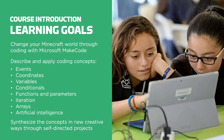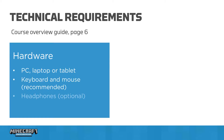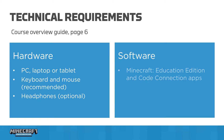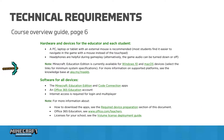You'll find the unit-specific learning goals in each educator guide. The technical requirements are found on page 6 of the course overview guide. Most students find an external mouse easier to navigate than a touchpad. Minecraft is also supported on a touch screen. Headphones are helpful during gameplay, or the volume can be turned off. Minecraft Education Edition does require internet access for login and multiplayer. Be sure to see this section of the guide for links to information about supported platforms, minimum system specifications, and Office 365 Education and licensing.